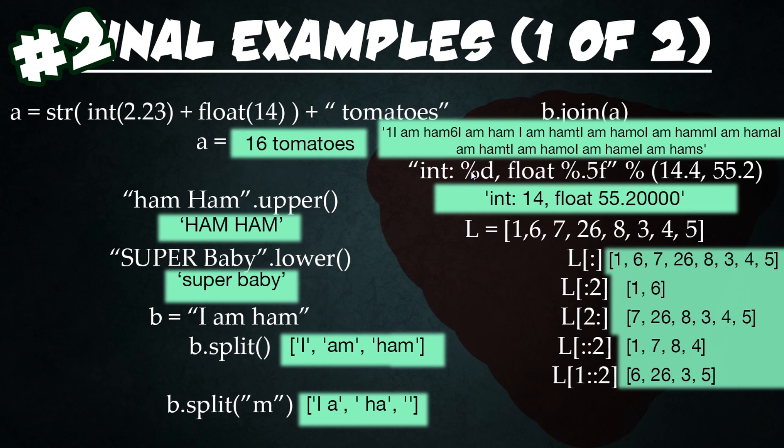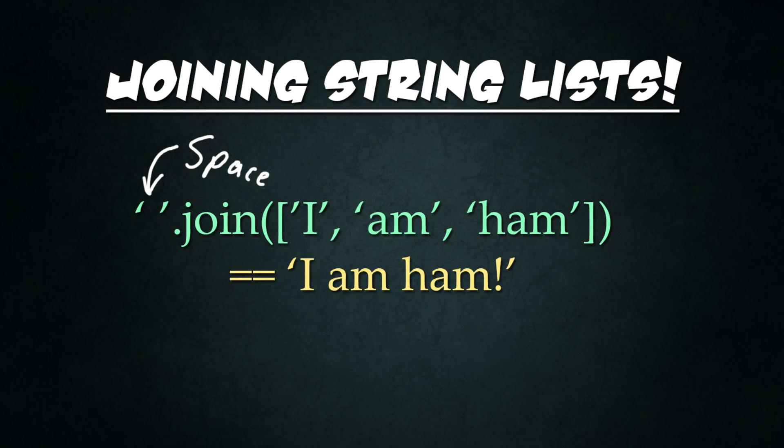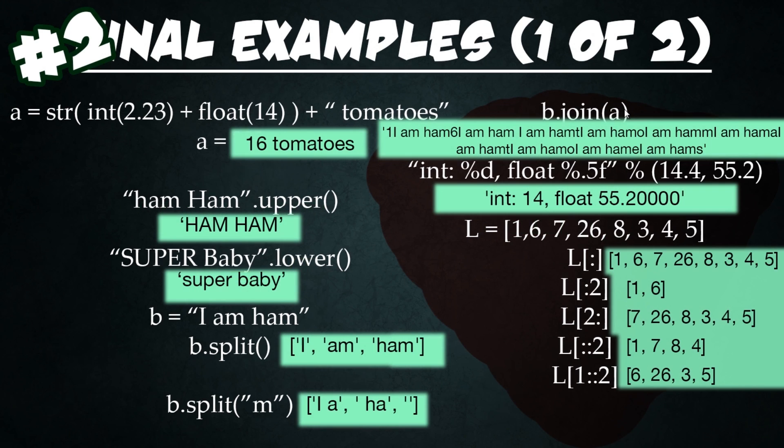Next I want to show you a method of combining strings. Join is a commonly used method used to join strings together or to convert a list of strings into a single string. This is a way of feeding in one string into another, and it'll actually feed it between every single character. So you'll see b right here is I am ham, and then a is actually 16 tomatoes. So what is going to happen is between every character for a, we're actually going to stick in b, which is I am ham. So it gets this really long, ugly string.